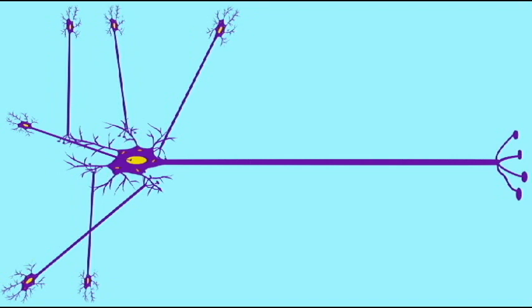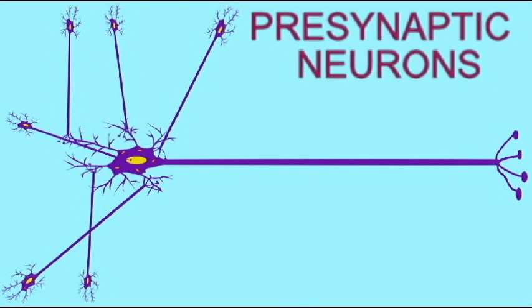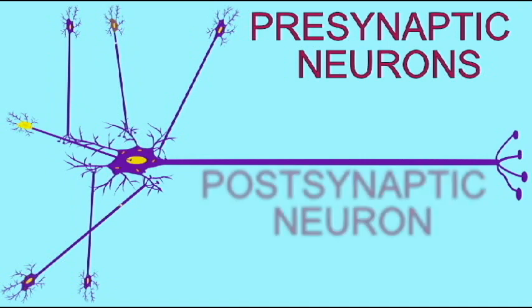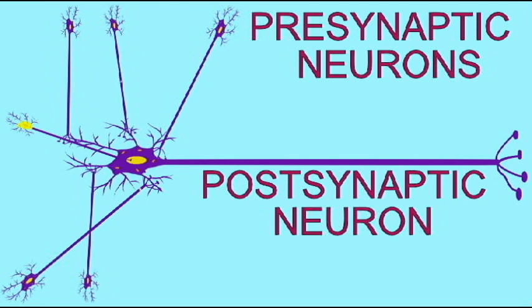Will the neuron pictured in the center here go to action potential? Well, in order to decide, it must interpret all of the incoming information, and this may be difficult because there may be 10,000 synaptic knobs from other neurons which contact its dendrites and soma.